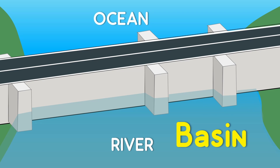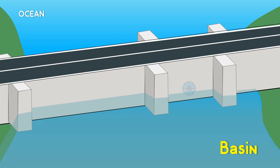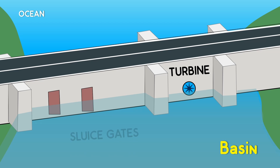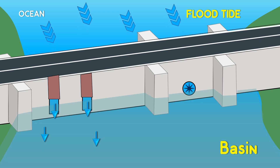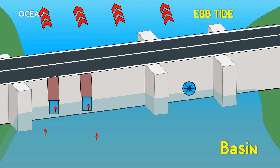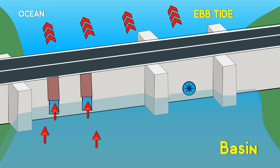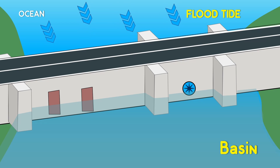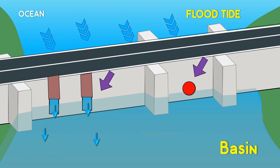This region is called the basin. The turbine is placed in the dam. It also has gates named sluice gates that allow the water to go into the basin during the flood tide and out during the ebb tide. During the flood tide, let's lock the turbine so that no water enters the turbine and keep the sluice gates open so that the water comes in through it.